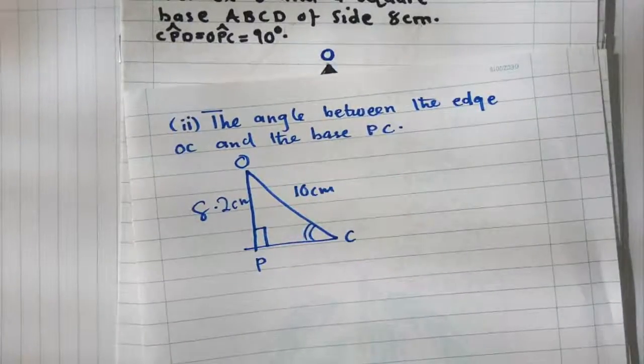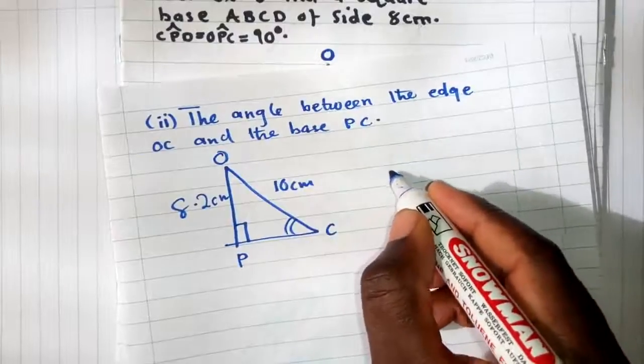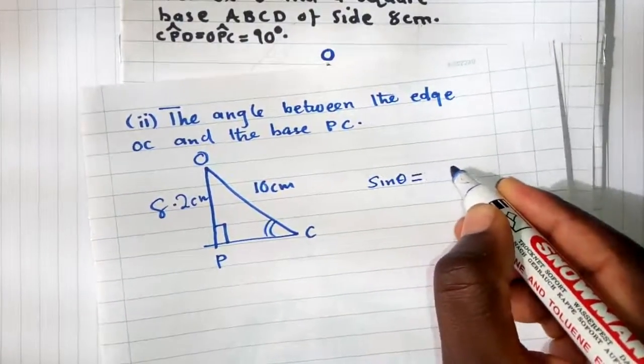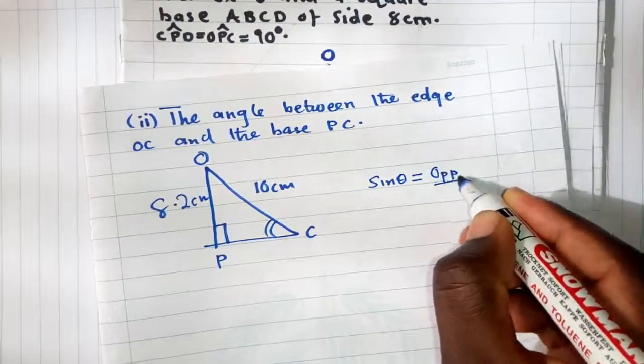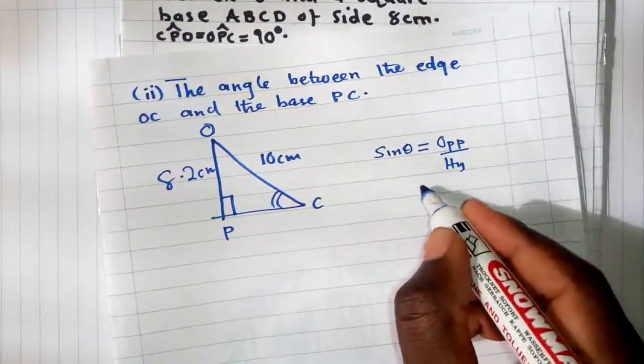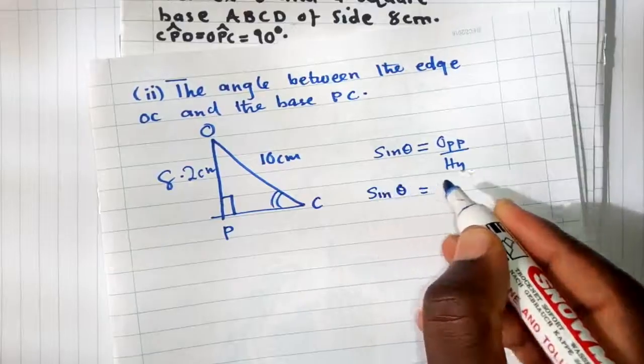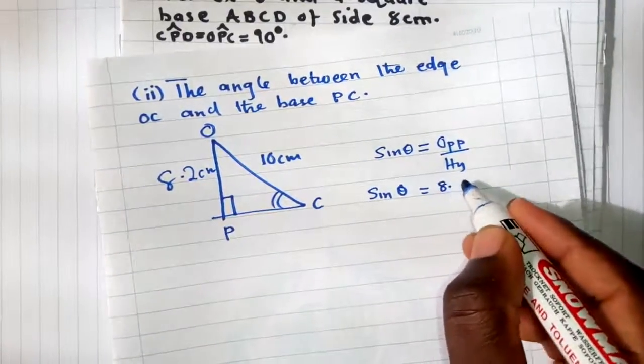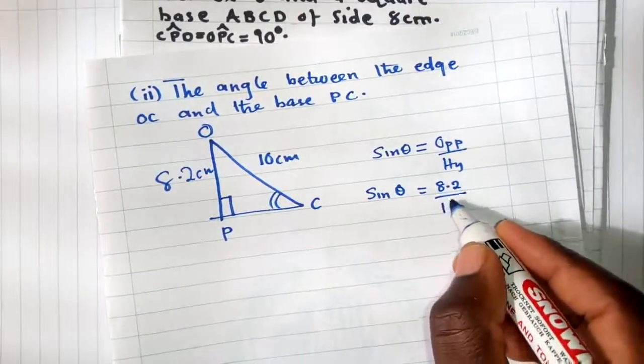So say we can use sine. Sine theta is equal to opposite over hypotenuse. So sine theta, we have opposite, yes it's 8.2 over hypotenuse is 10.